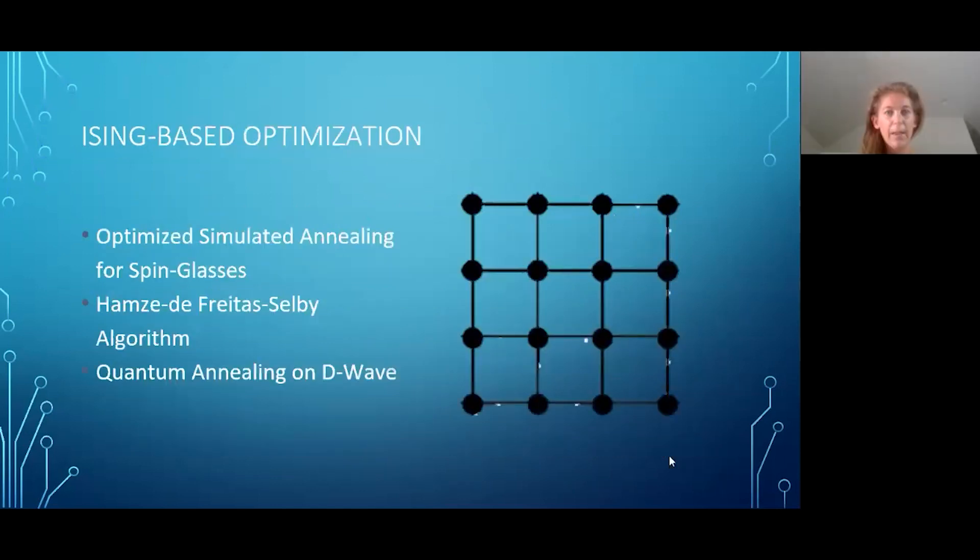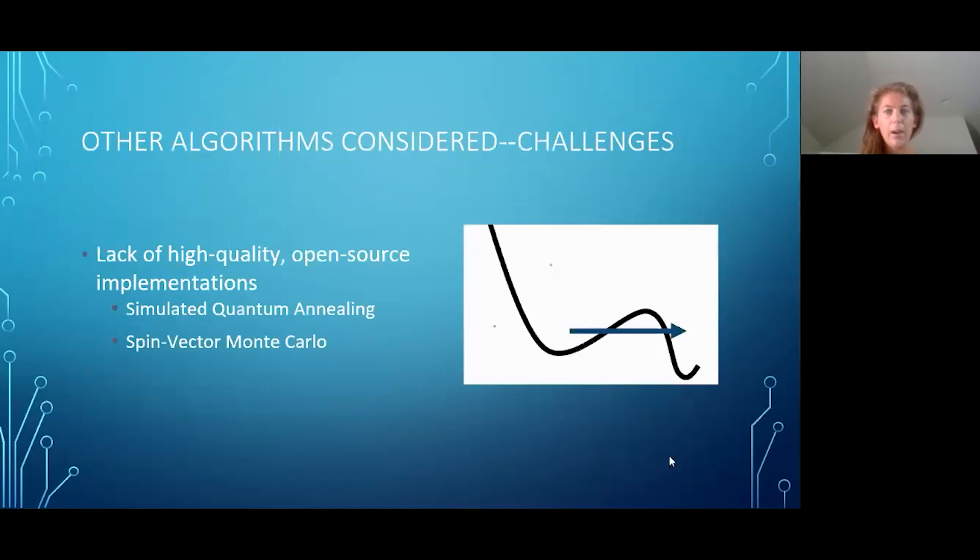Some of the Ising-based optimization algorithms we considered included optimized simulated annealing for spin glasses, the Hamza-Defritas-Selby algorithm, and a quantum annealing solution on D-Wave. Other algorithms considered included simulated quantum annealing and spin vector Monte Carlo, which include ways for the solution to tunnel through energy barriers. However, the lack of high-quality open-source implementations limited our ability to explore these algorithms.